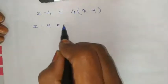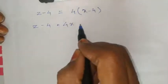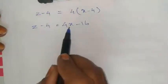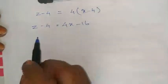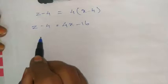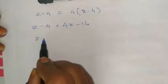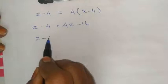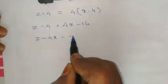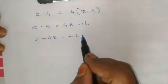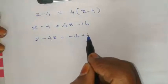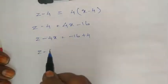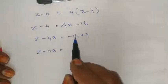From the third equation, expanding: z minus 4 equals 4x minus 16. Bringing variables to one side and constants to the other: z minus 4x equals minus 16 plus 4, so z minus 4x equals minus 12, which means 4x minus z equals 12.